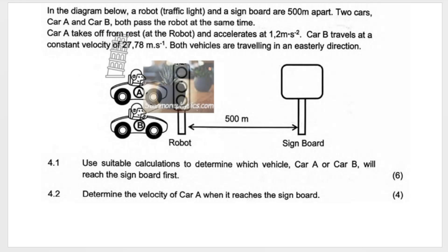Car A takes off from rest. As soon as they say things like this, these key words, we know from rest means that my initial velocity is 0 at the robot, that's when the car's at rest, and accelerates at 1.2 meters per second squared. This is acceleration.